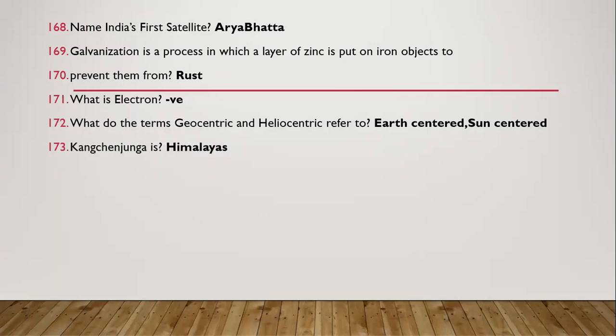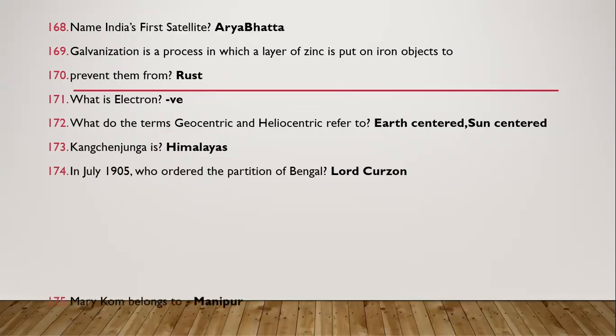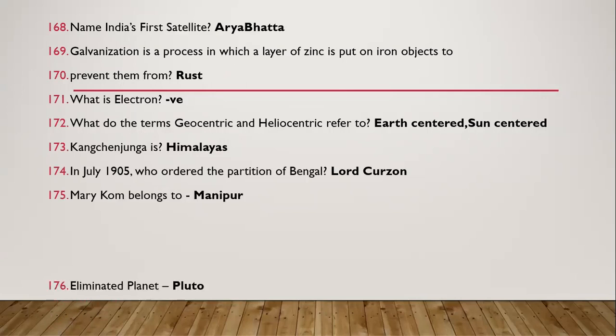Question 169: Kangchenjunga is in the Himalayas. Question 170: In July 1905, who ordered the partition of Bengal? Lord Curzon. Question 171: Mary Kom belongs to Manipur state. Question 172: Eliminated planet was Pluto.